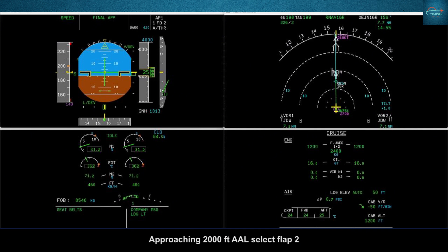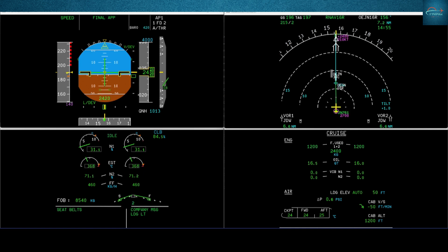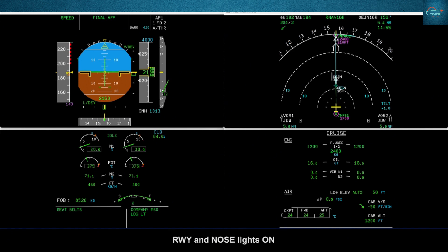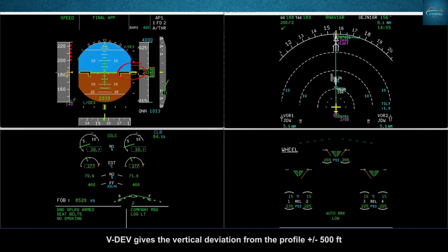Approaching 2,000 feet above aerodrome level, select Flap 2. Flap 2, speed checked. Gear down, gear down, arm spoilers. Runway and nose lights on. V-dev gives the vertical deviation from the profile, plus or minus 500 feet.